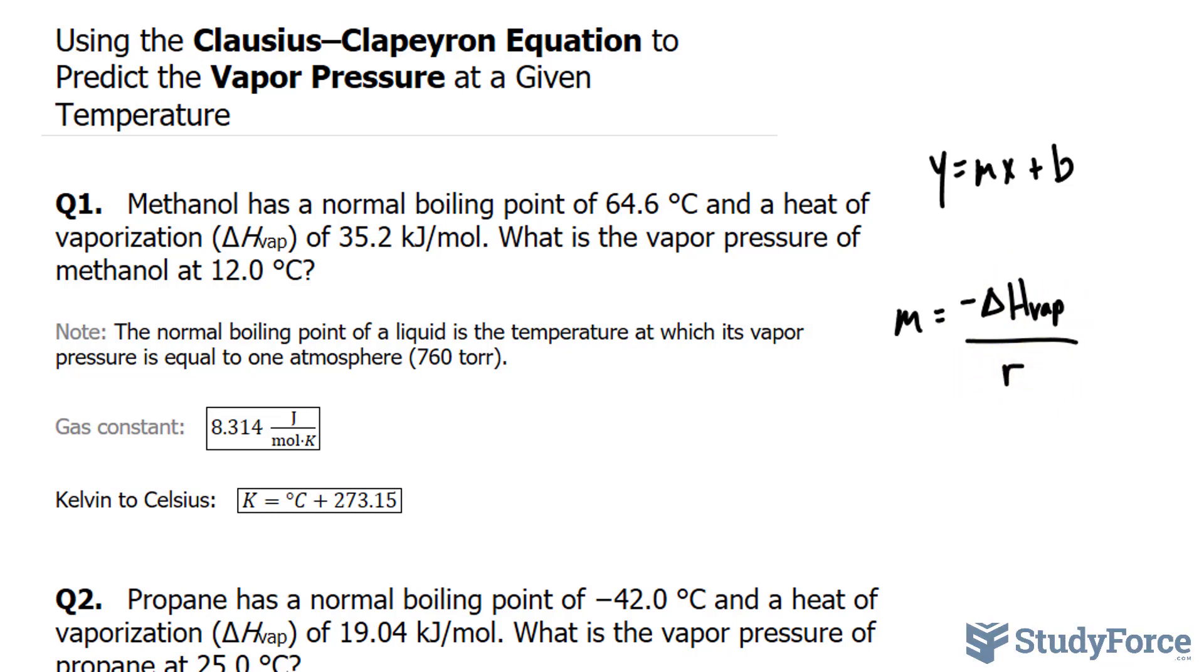Luckily, they've given us the heat of vaporization. We can fill in this part, but first we have to convert kilojoules into joules because the gas constant here is in joules. Let's go ahead and do that. 35.2 kilojoules per mole. To go from kilojoules to joules, we'll write 1 kilojoule and at the top 1,000 joules.